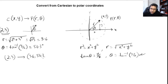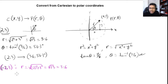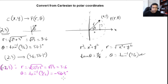Now let's look at another example: (-2, 3). Converting to polar: r = √((-2)² + 3²) = √13 ≈ 3.6. For theta: tan⁻¹(y/x) = tan⁻¹(3/(-2)). Using the calculator, this gives -56.3 degrees.